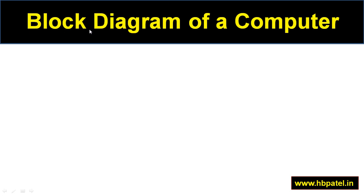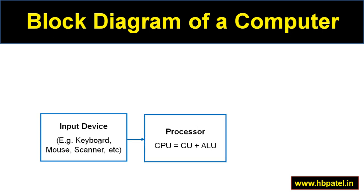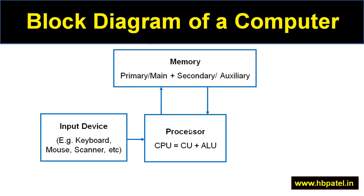Before we start talking about C programming, let us spend a couple of minutes understanding the basic block diagram of a computer. A computer has input devices where we read the data — input devices could be keyboard, mouse, scanner, etc. The processor, normally called the CPU (central processing unit), comprises two components: the CU (control unit) and the ALU (arithmetic and logical unit). Basically, the CPU is a computing element that processes input data based on instructions.